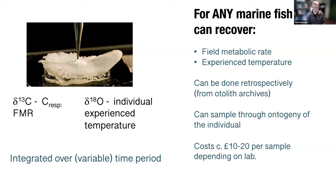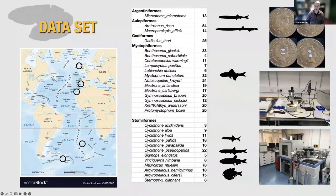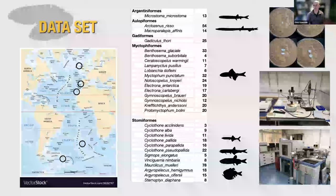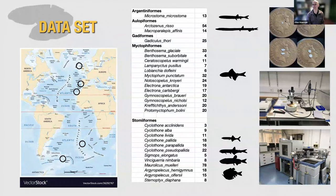Moving now to mesopelagic fishes specifically: so far we've used this proxy to infer metabolic rates for around 30 different species of mesopelagic fish, also including some from the Southern Ocean. We have a good representation of both migrating and non-migrating taxa, and I hope you get an idea of the size of some of these otoliths that Jethro has been working hard to section and analyze.